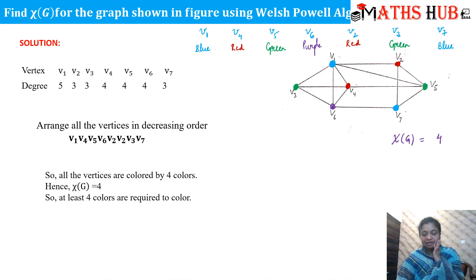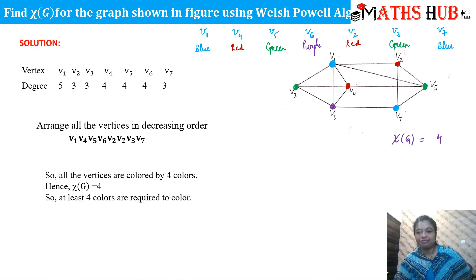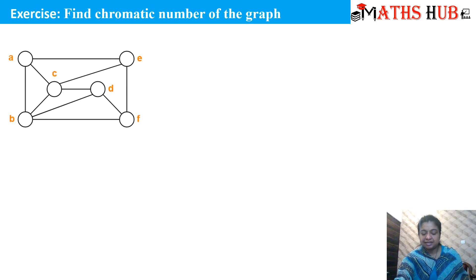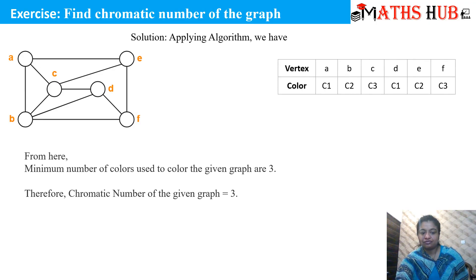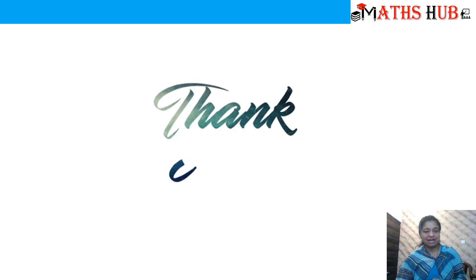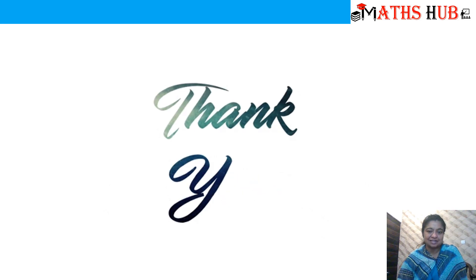I hope the algorithm is clear. There are only a few steps: write down the vertex degrees, arrange them in descending order, and starting from the first vertex, assign colors. You can try the exercise shown — the answer is already given in the slides so you can check your answer after attempting it. The chromatic number for that graph can be worked out using the same method. Thank you so much. If you haven't subscribed yet, do subscribe to my channel for the latest updates. Believe in yourself and you will succeed!